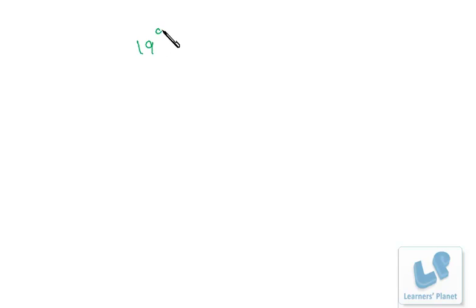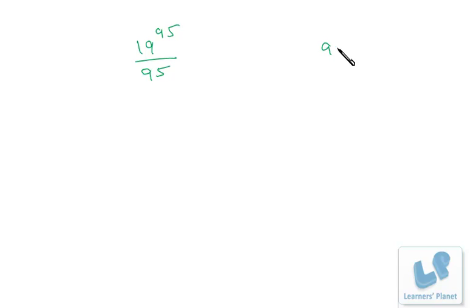Now I come back to your query. The first one: 19 raised to 95 divided by 95 — what will be the remainder? Note that 95 is a multiple of 19; specifically 95 = 19 × 5. So this problem can be made simpler.